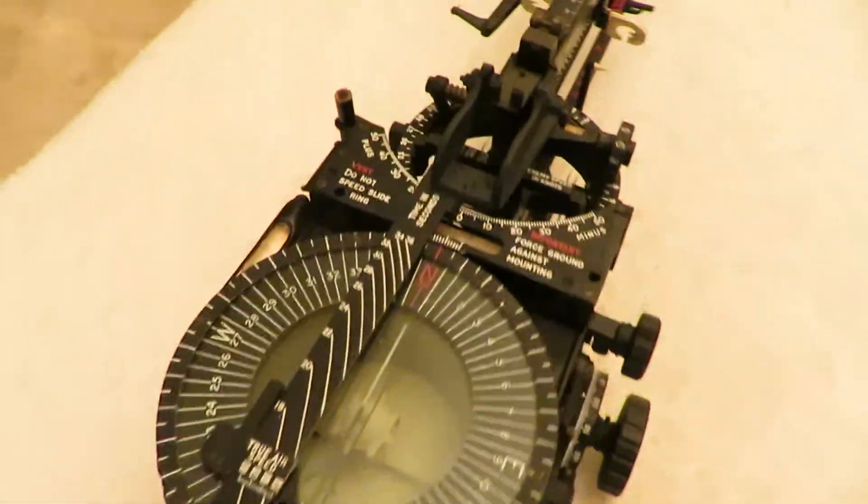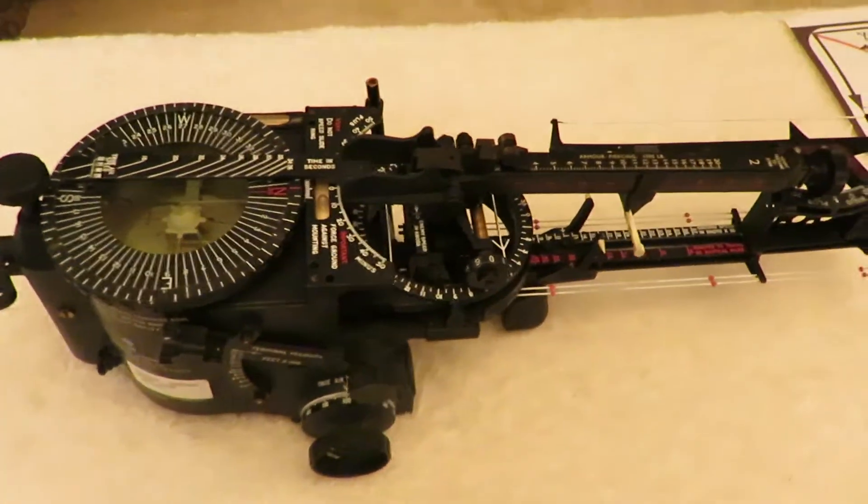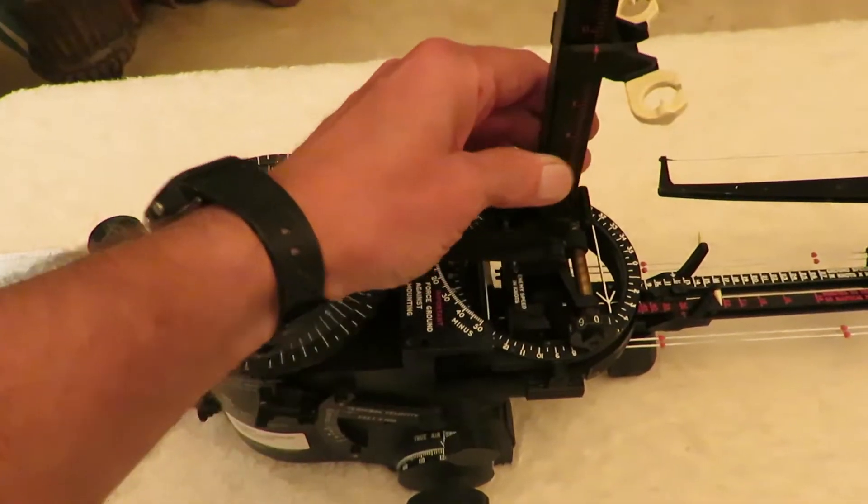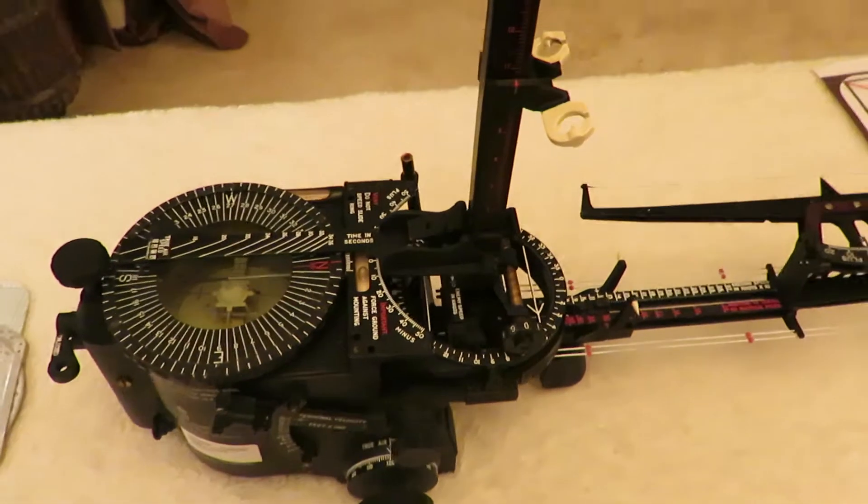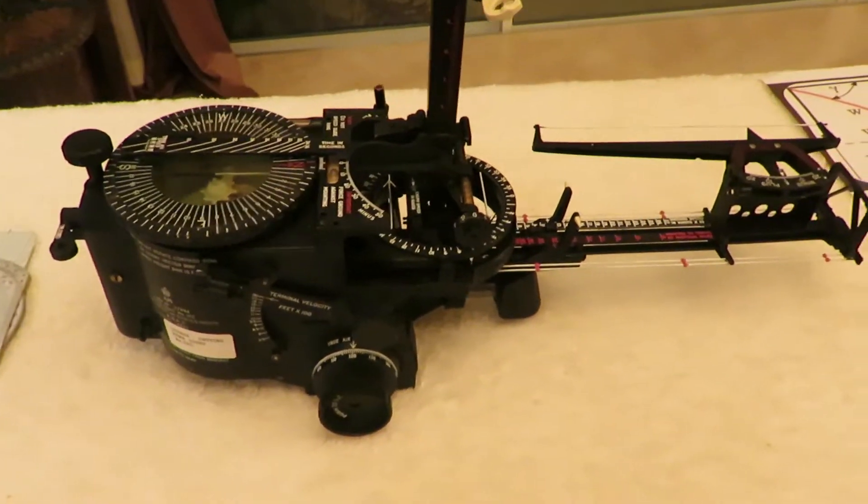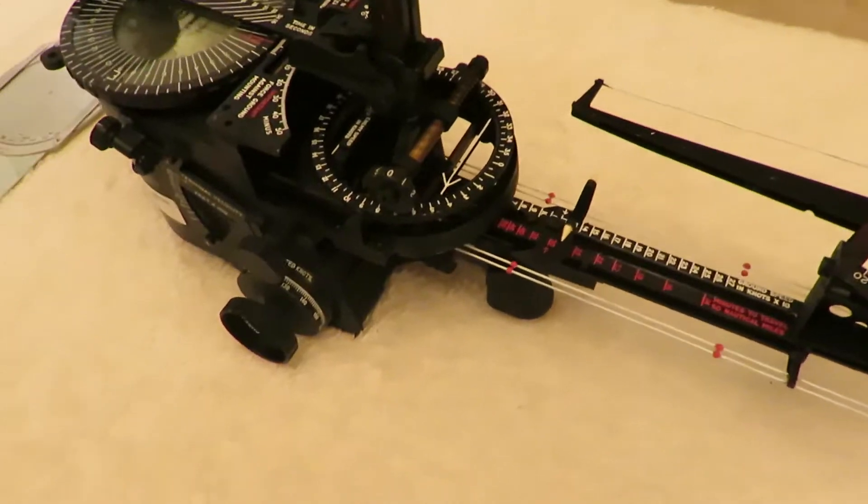He began developing bomb sights as early as 1916 to solve problems encountered during World War I with bomb sights that were unable to account for drift.